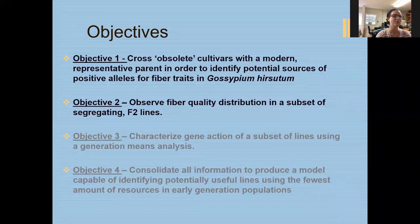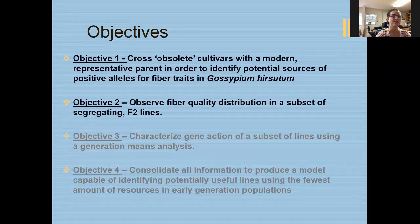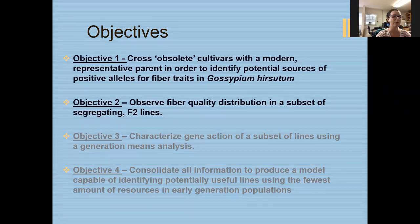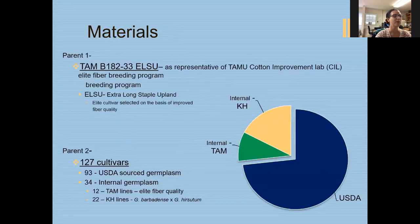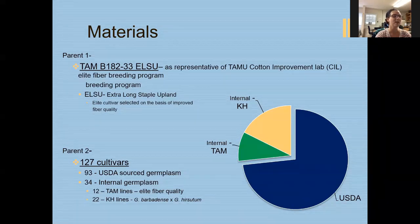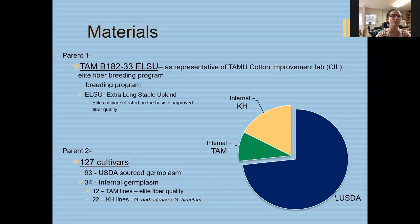Objectives three and four I hope to eventually address: objective three is to characterize gene action using generation means analysis, and objective four is to coalesce all of this together into a model which would help us more easily identify these obsolete lines without having to go through as much of a breeding process. Starting off with objective one — that is my line by tester. I have two parents. My first parent is a representative parent, TAM B182-33 extra long staple upland, which is representative of our TAMU Cotton Improvement Lab lines.